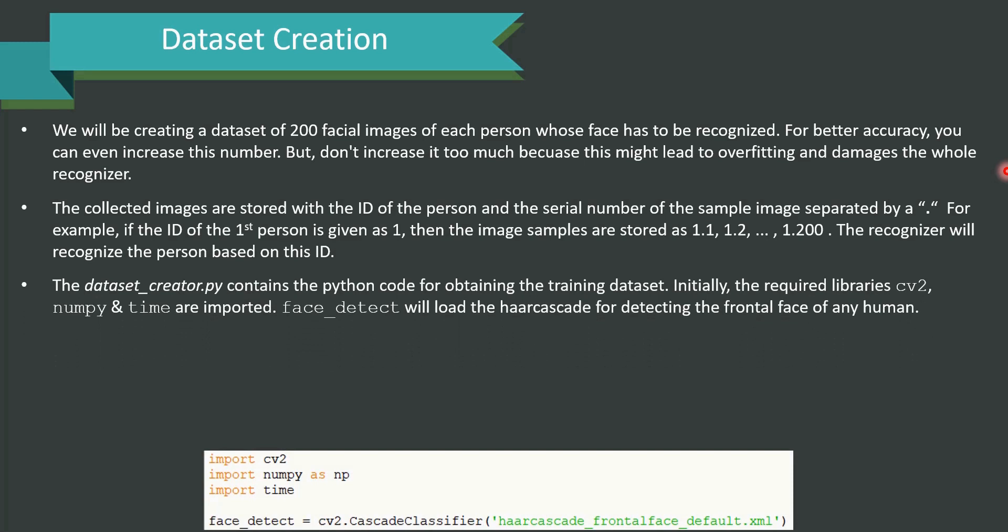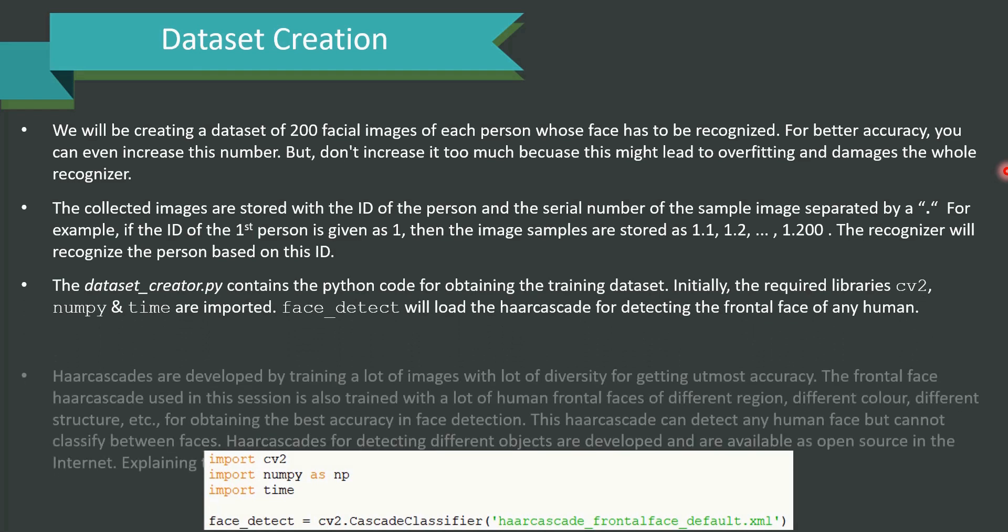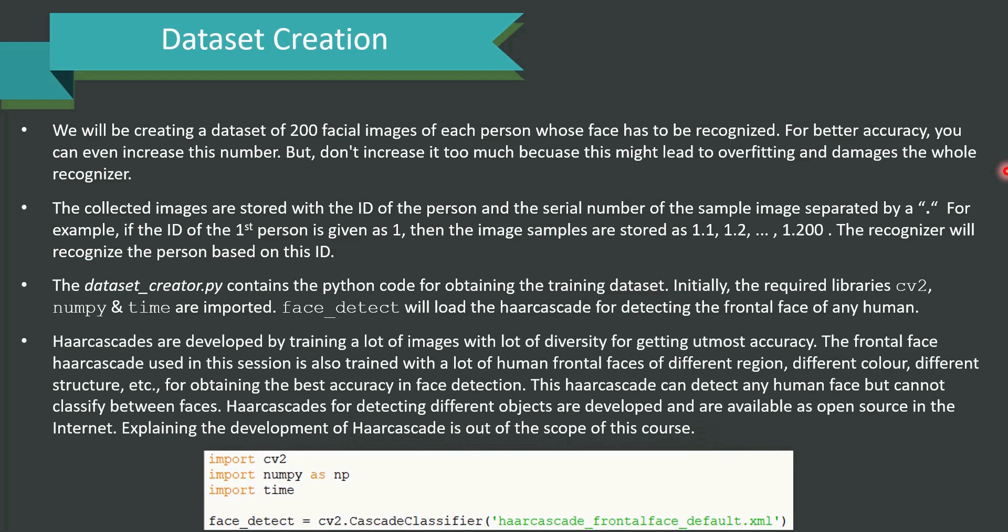The dataset_creator.py contains the python code for obtaining the training dataset. Initially, the required libraries cv2, numpy and time are imported. face_detect will load the haar cascade for detecting the frontal face of any human. Haar cascades are developed by training a lot of images with lot of diversity for getting utmost accuracy. The frontal face haar cascade used in this session is also trained with lot of frontal faces of human of different region, different color, different structure for obtaining the best accuracy in the face detection.